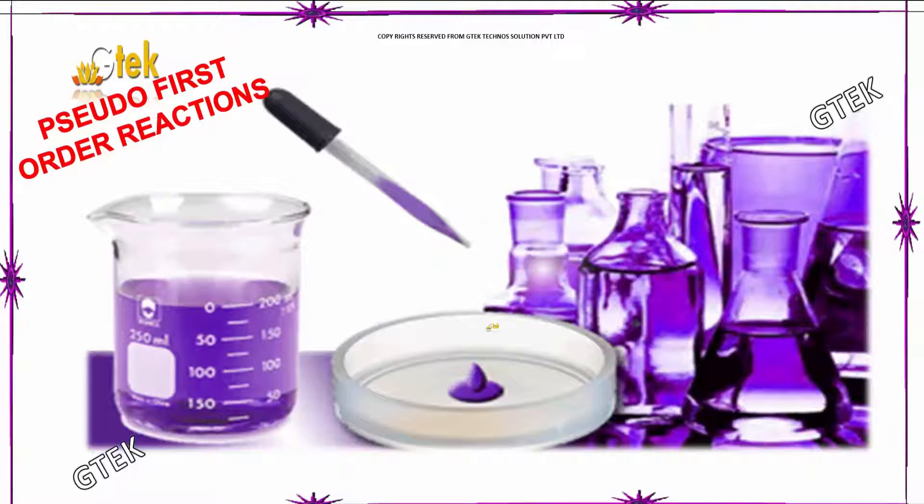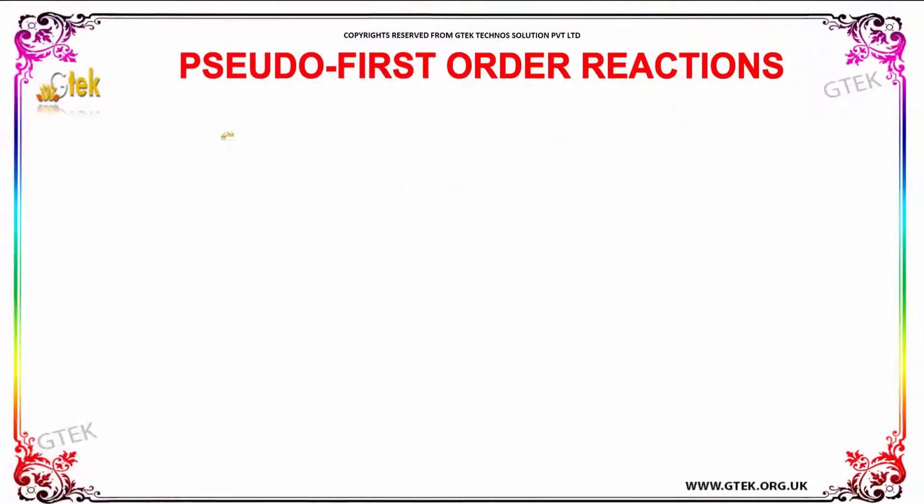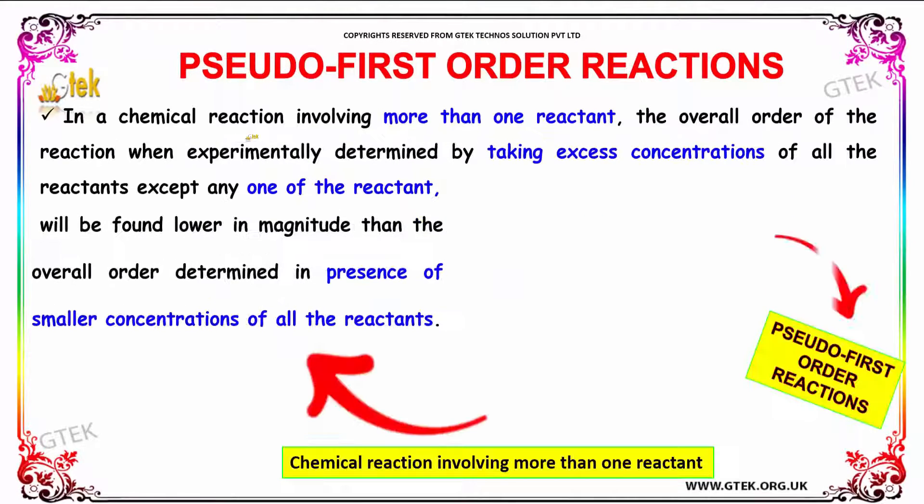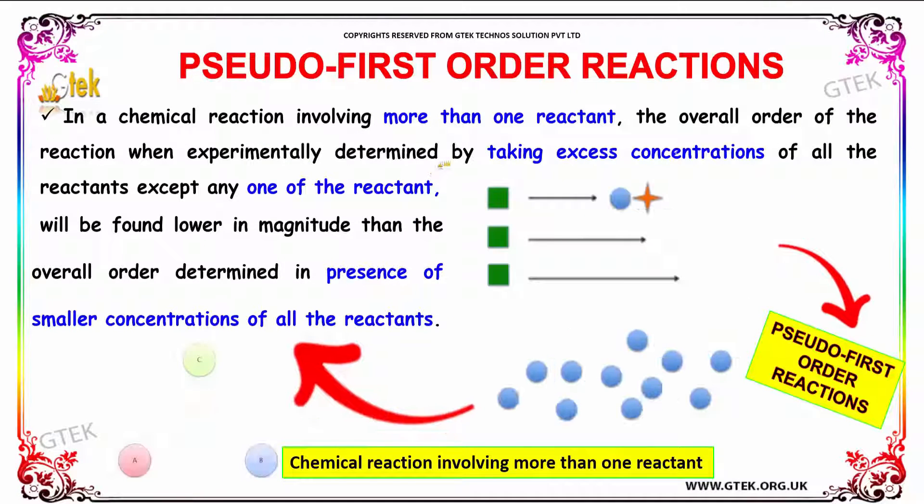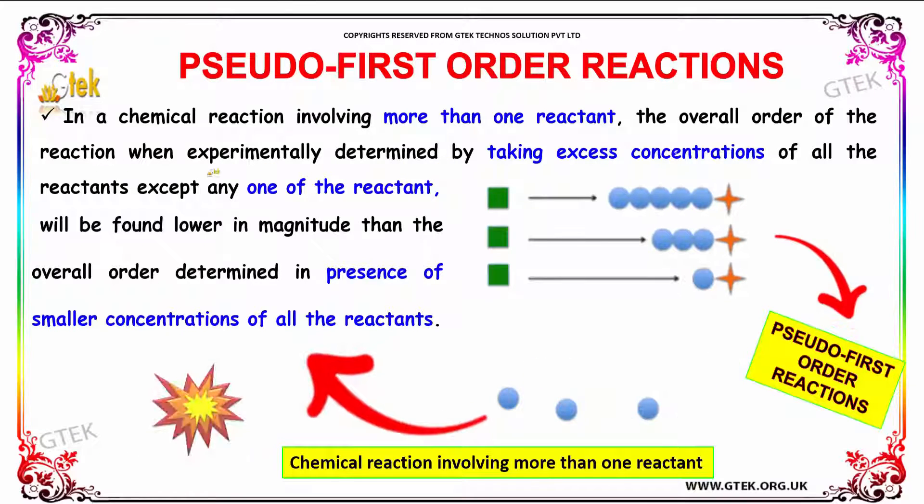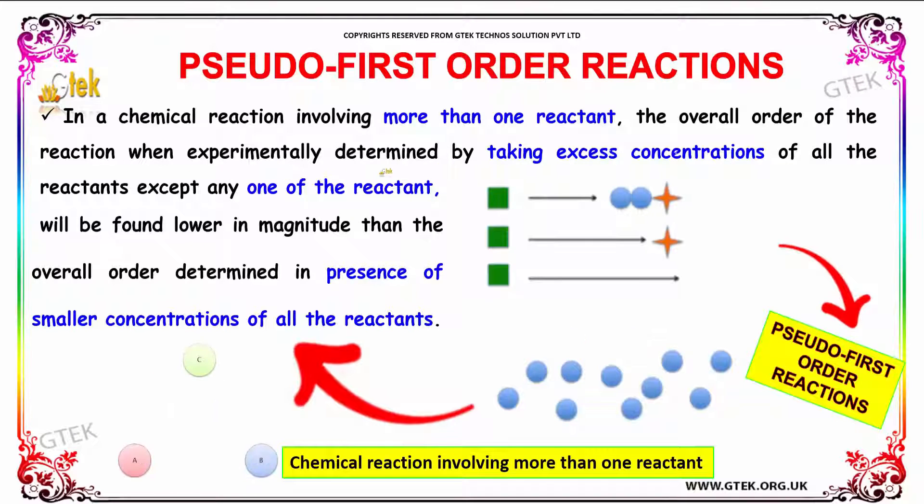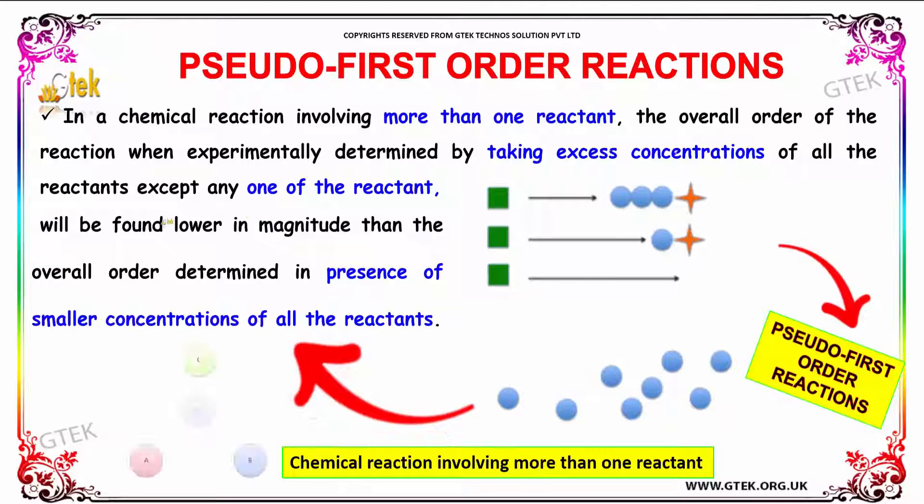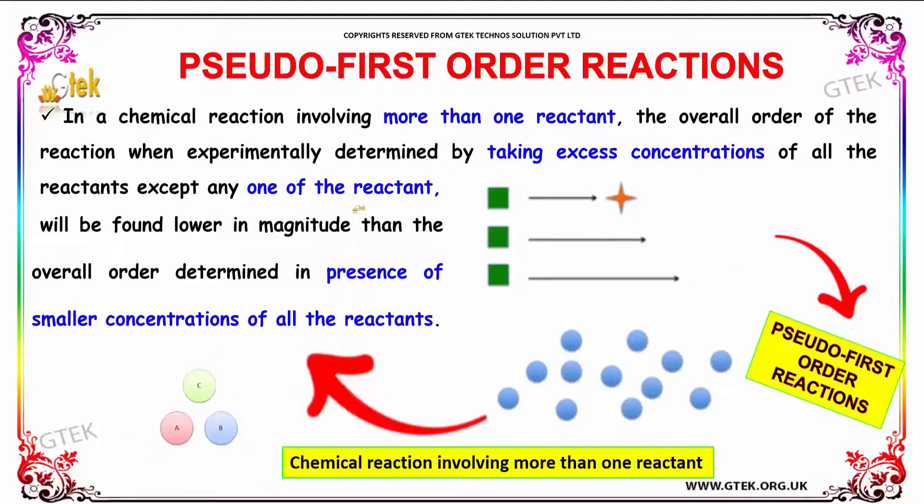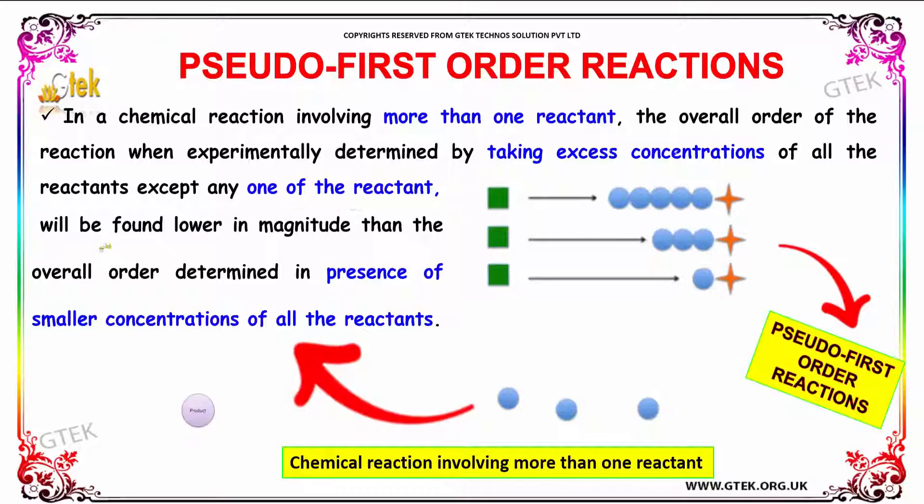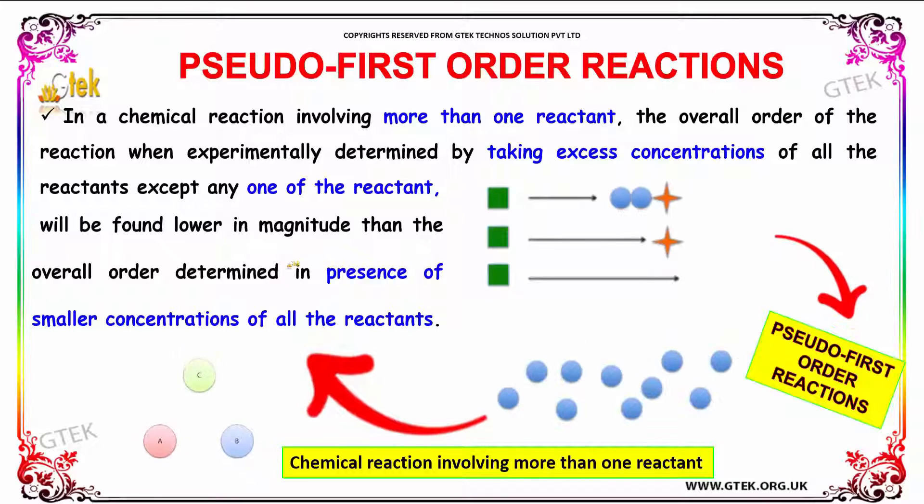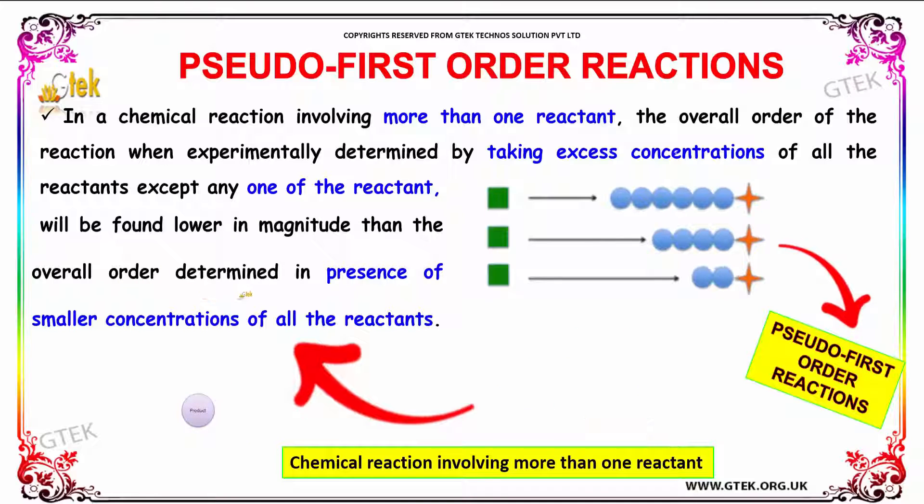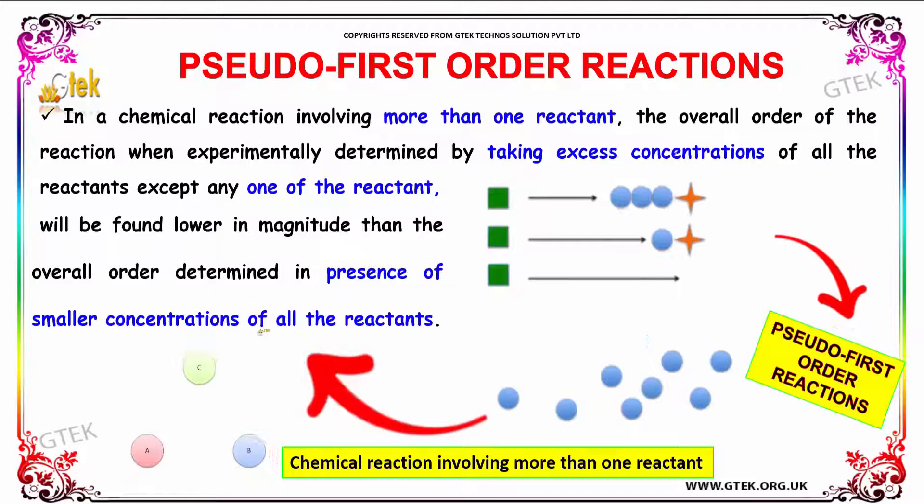Here is the typical picture of a pseudo first-order reaction. Any chemical reaction involving more than one reactant, the overall order of the reaction when experimentally determined by taking excess concentration of all the reactants except any one of the reactant, will be found lower in magnitude than the overall order determined in presence of smaller concentration of all the reactants.